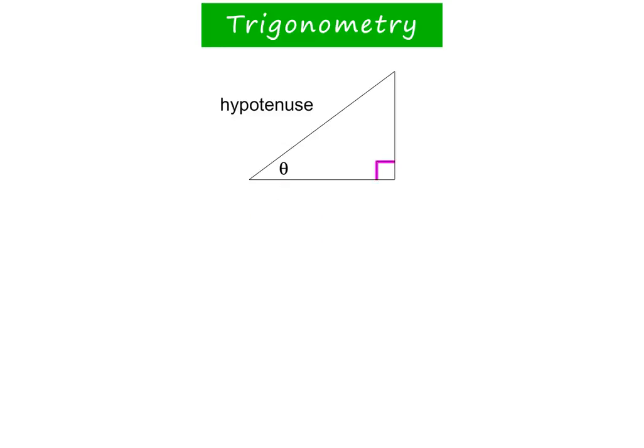In any right-angled triangle, the side opposite the right angle is called the hypotenuse. Also note, this hypotenuse lies next to the angle theta. On the other side of theta is the side adjacent to theta. And the third side is the opposite side because it lies opposite theta.